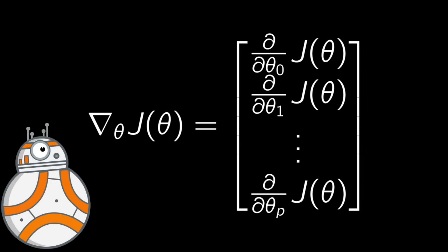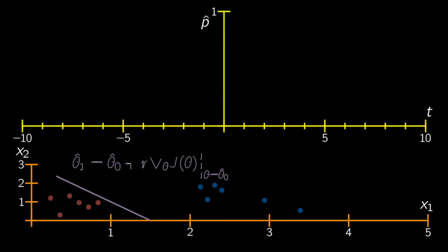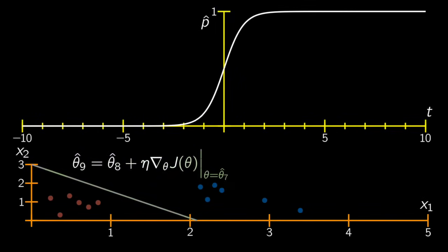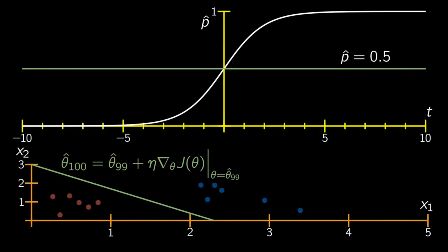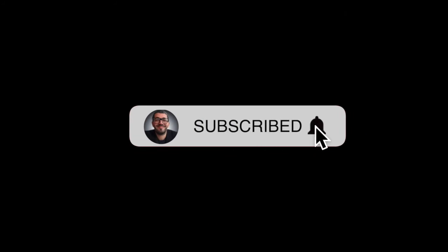Once you have the gradient vector containing all the partial derivatives, you can then use it in algorithms such as batch gradient descent. And that's it. You now know how to train a logistic regression model using, for example, stochastic gradient descent. For SGD, you would just take one instance at a time, because stochastic gradient descent selects randomly the rows of x. And for mini-batch, you would choose randomly mini-batches at a time from x.